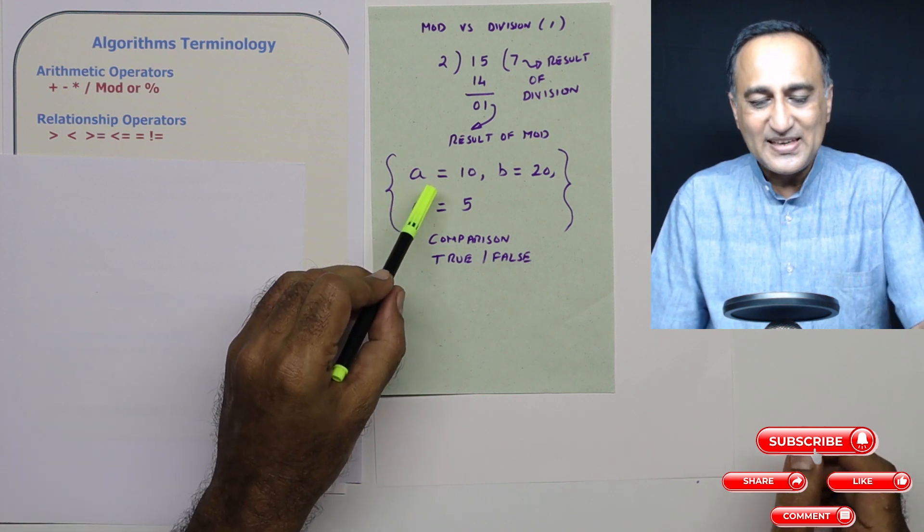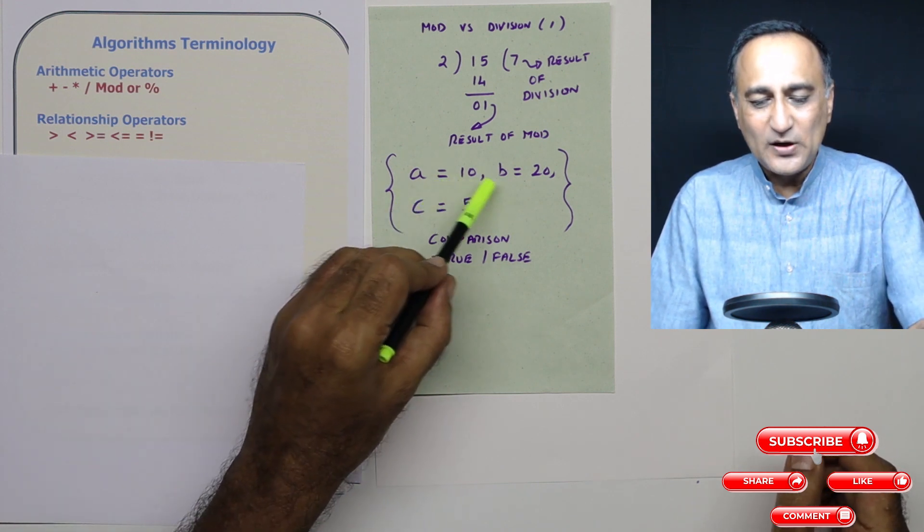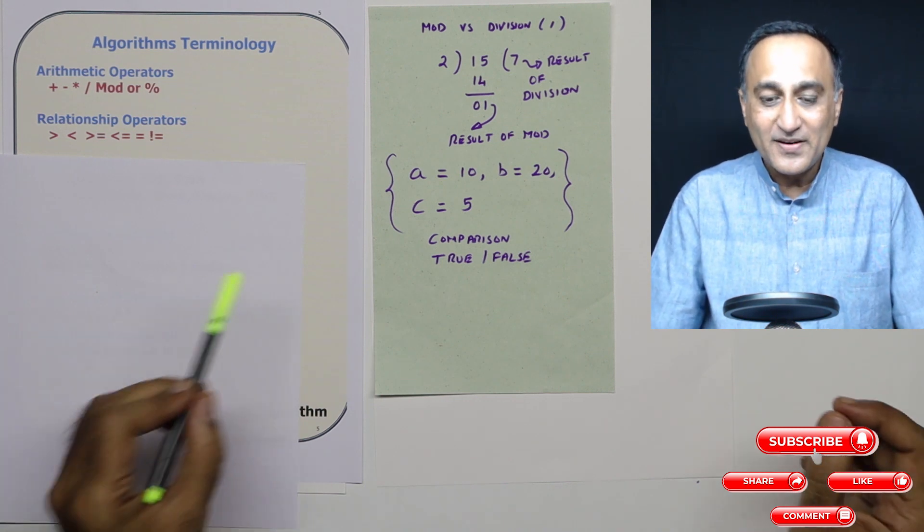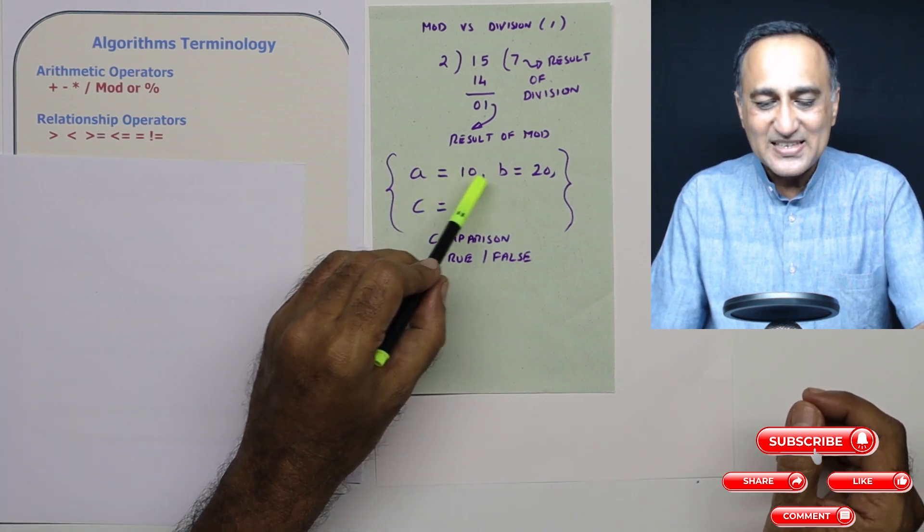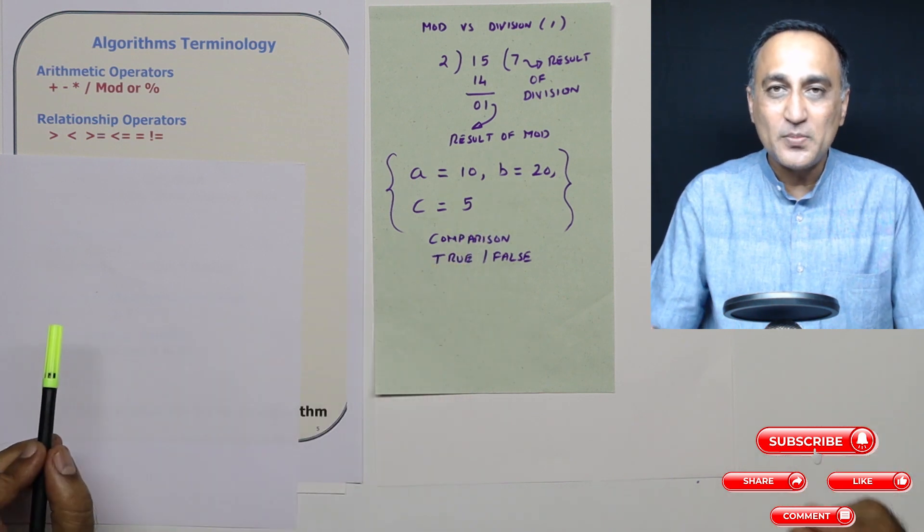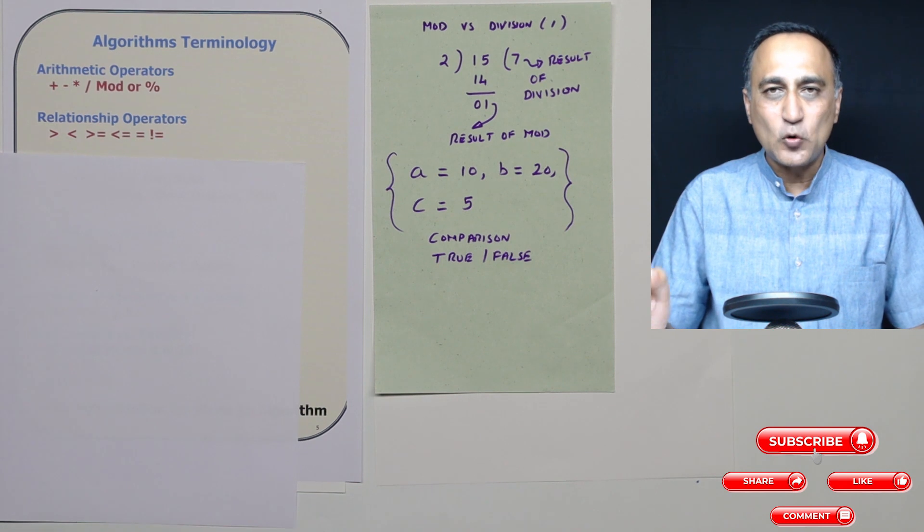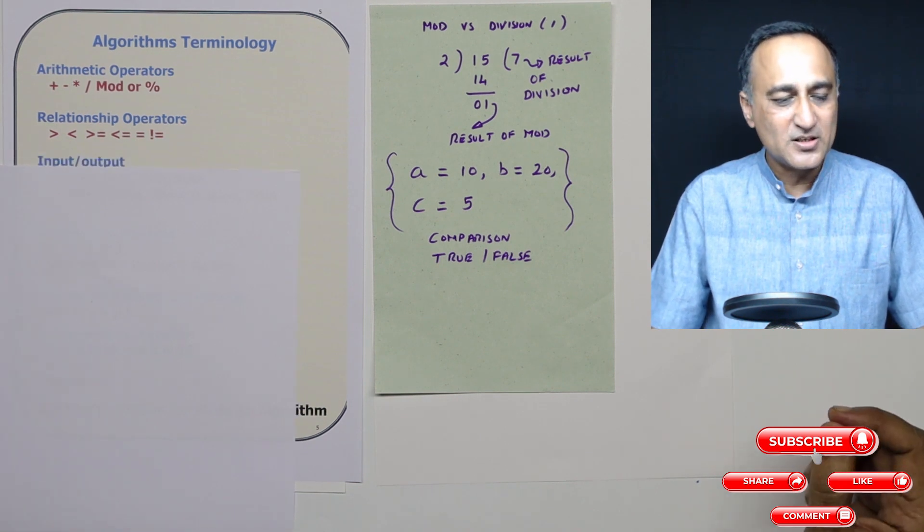The outcome or output of a relational operator is the answer true or false. For example, if I say is a equal to b, the answer is false. But if I say is a less than or equal to b, the answer is true. So the output of a relational operator gives me the answer true or false.